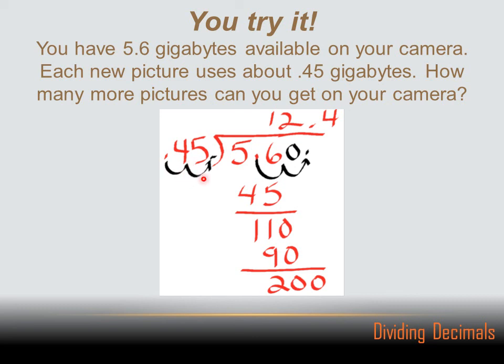Then we've got to come into the dividend and move the decimal point the same number of places we move the decimal on the divisor. And then it's a pretty simple math problem. 45 goes into 560 12.4 times.